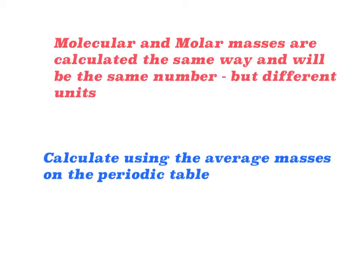The good news is that they're calculated the exact same way, and they will have the same number, but they're going to have different units. Now that doesn't mean that they're the same quantity, it just means that they have the same number, different units. For example, if you were six feet tall or you were six miles tall, you would not be the same height. It's just the same number. And we're going to calculate all of these using the average masses on the periodic table. So you're going to want to get your periodic table out as we're going through this. Get that out right now and your calculator.